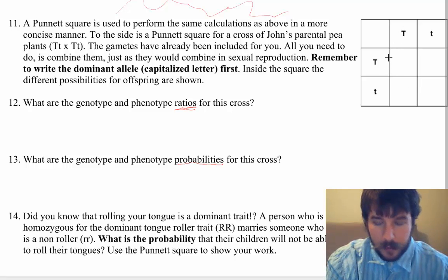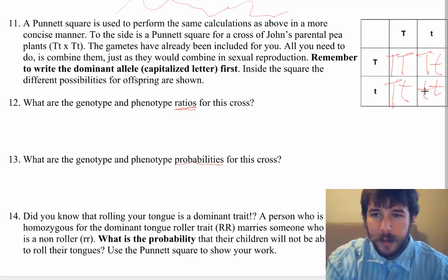So for the most part, you guys did your Punnett squaring perfectly, right? Big T, big T, big T, little t. Over here gets a big T, comes down, little t comes over, and then a little t, little t.